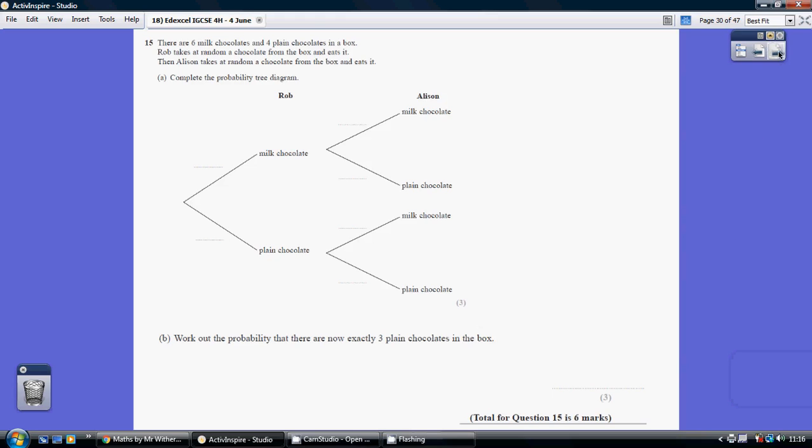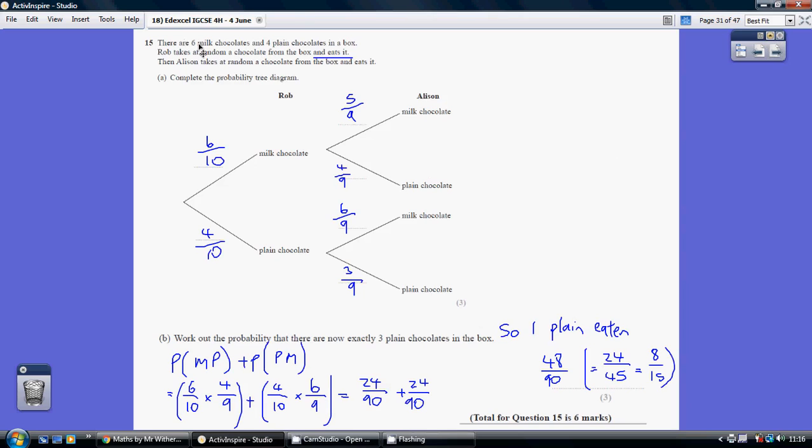Question 15. So, to start off, we've got 6 milk chocolates and 4 plain chocolates.